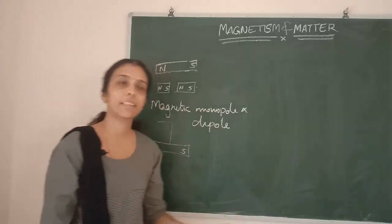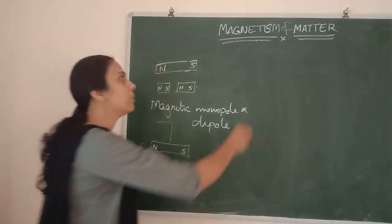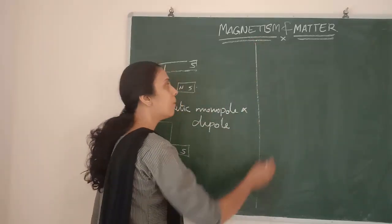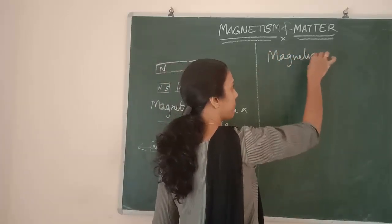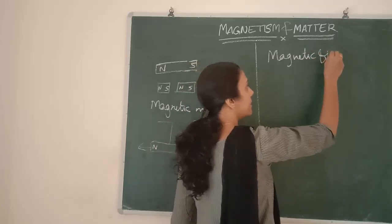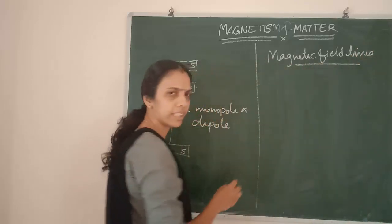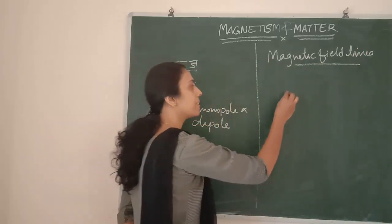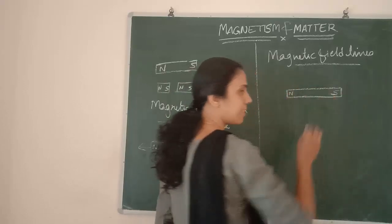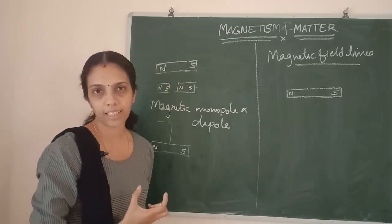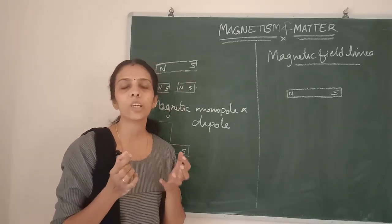These are some of the basic ideas which we already know about our Magnet. Now we are going to consider what are the properties of Magnetic Field Lines. What is meant by a Magnetic Field Line? If I am considering a Magnet, it will be having some Magnetic Power. That Magnetic Power we will say is the Strength of the Magnet.